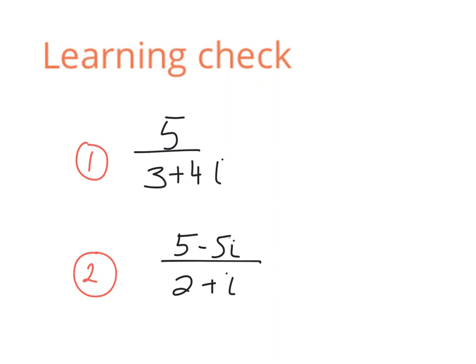For the learning check, we have some examples. The first is 5 all divided by 3 plus 4i — note there's no imaginary part on top, so it's a shorter example. The second is more similar to the one we've just done. Focus on finding the complex conjugate of the bottom, then multiplying above and below by it.